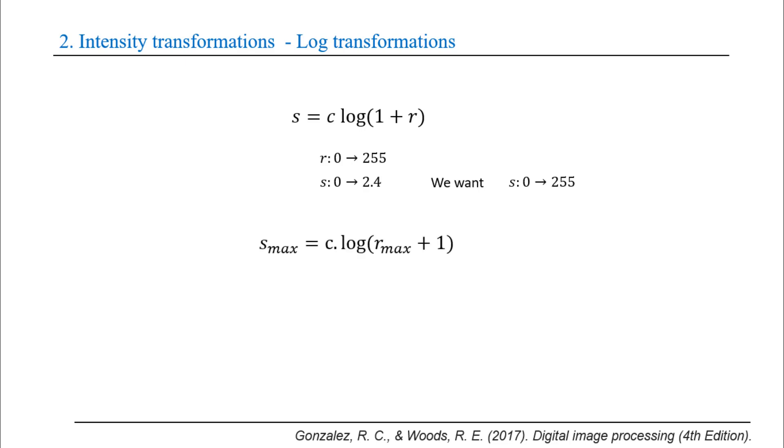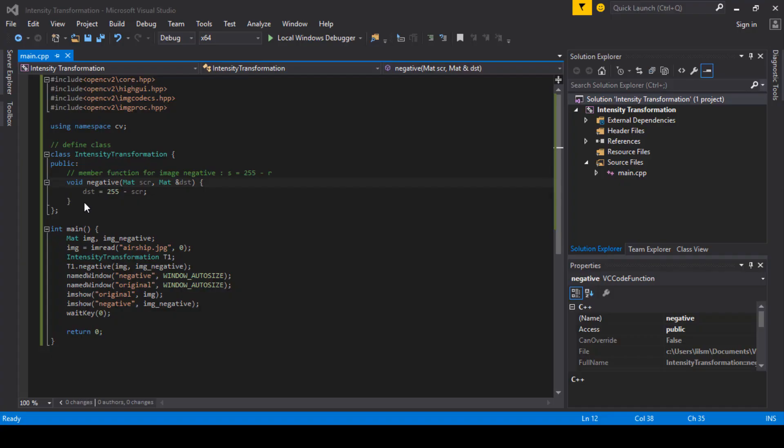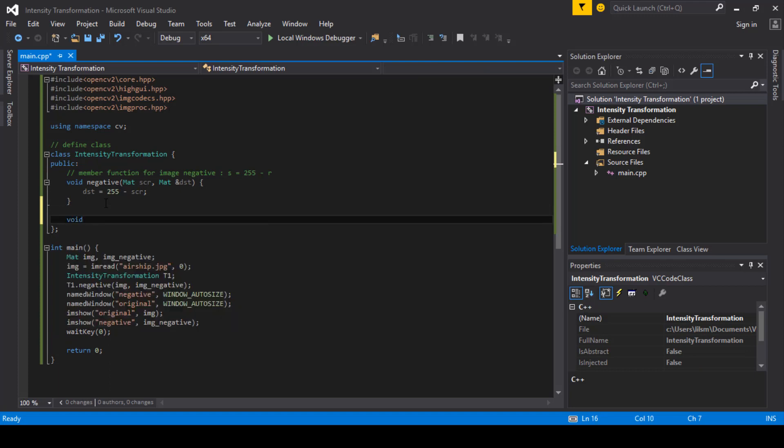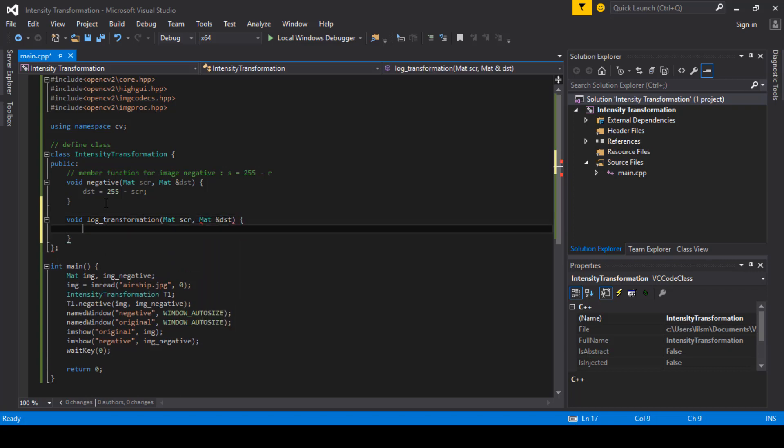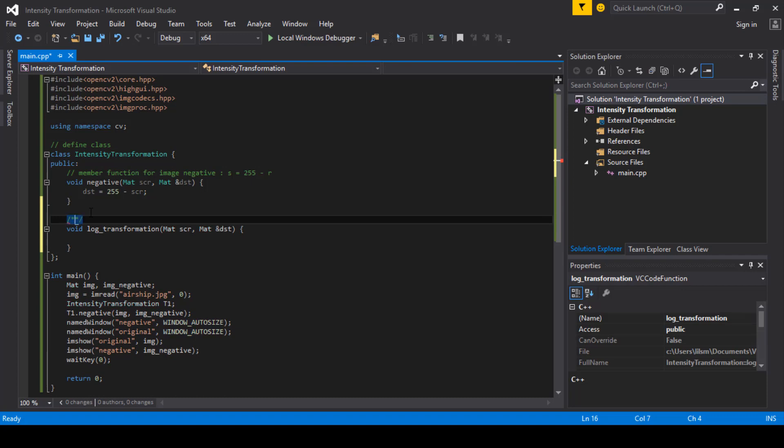Now let's implement log transformation on Visual Studio. I will define a member function log transformation with the same arguments as negative: source and destination.